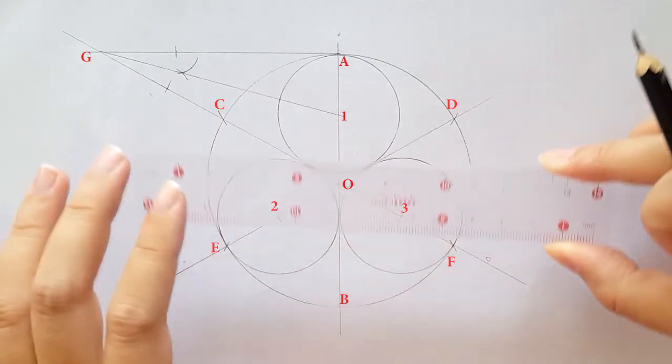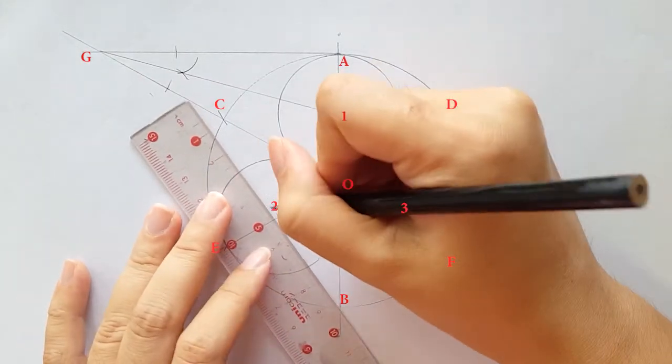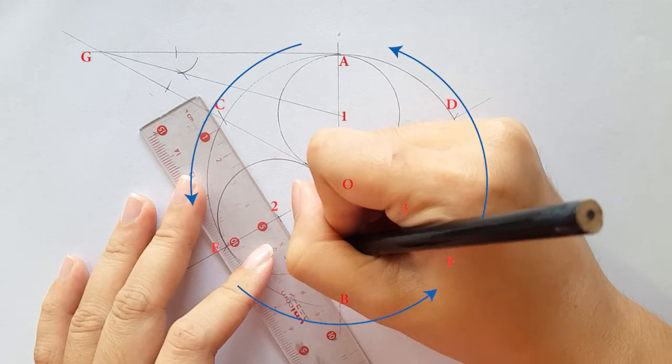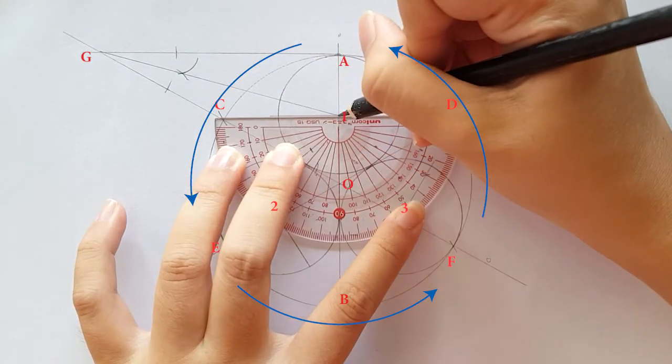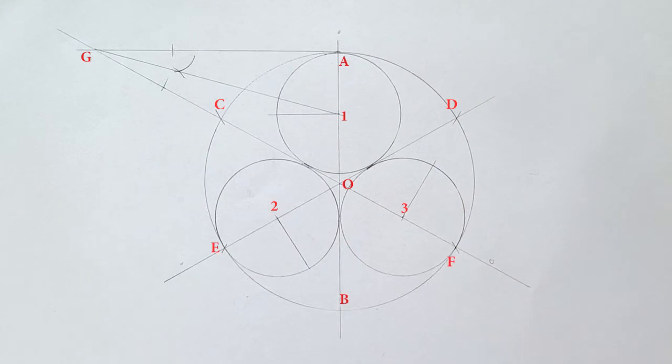Place your protractor point on point 1, 2, 3 to draw a perpendicular line that heading anti-clockwise direction as shown in the video. These points are H, I and J.